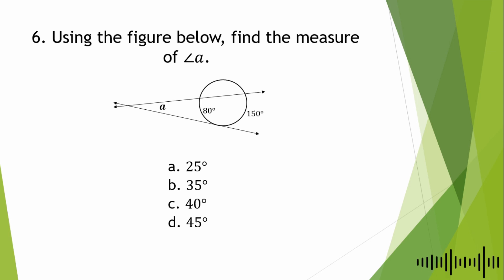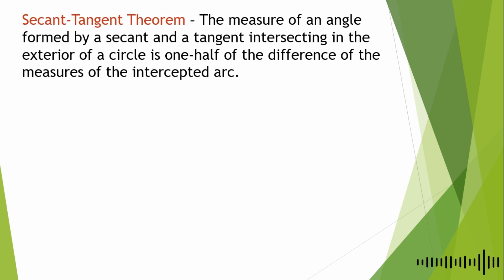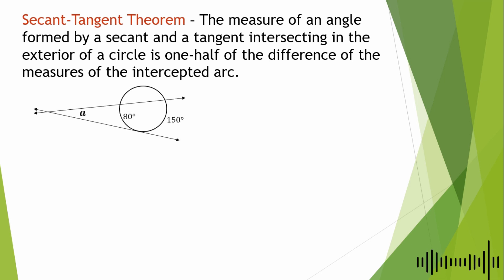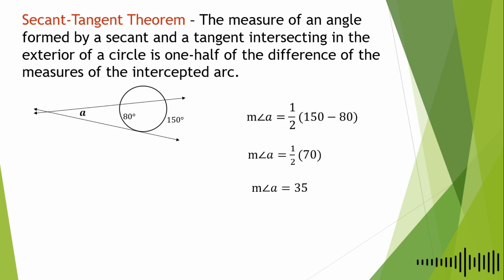Sixth question: using the figure below, find the measure of Angle A. A. 25°, B. 35°, C. 40°, D. 45°. We will use the secant-tangent theorem: the measure of an angle formed by a secant and a tangent intersecting in the exterior of a circle is one half of the difference of the measures of the intercepted arcs. So the measure of Angle A = ½ × (150 − 80) = ½ × 70 = 35°. The answer is letter B.